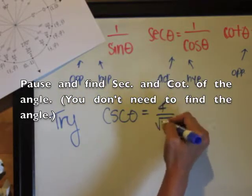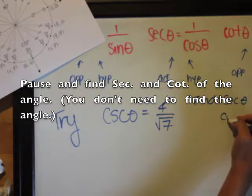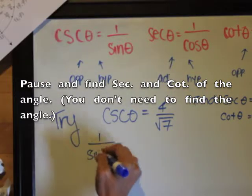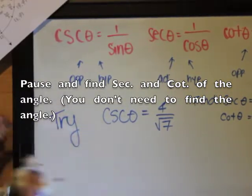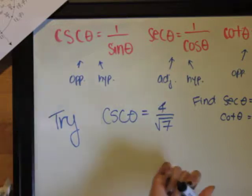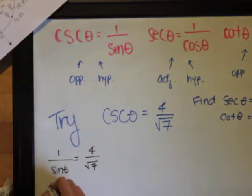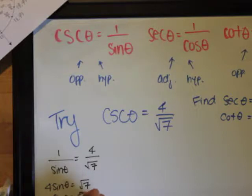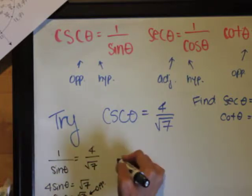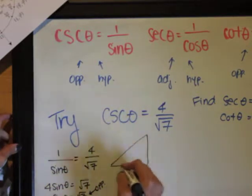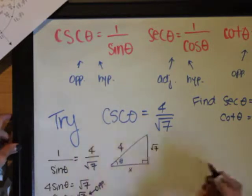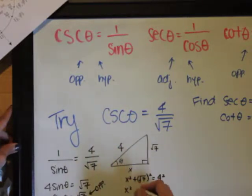Now I want you to try csc θ = 4/√7 and find secant θ and cotangent θ. Substitute csc θ with 1/sin θ, then you get sin θ = √7/4. √7 tells you the opposite length of the right triangle and 4 is the hypotenuse. Using the Pythagorean theorem, you should get the adjacent length, which is 3 in this case.